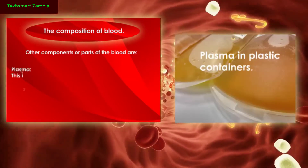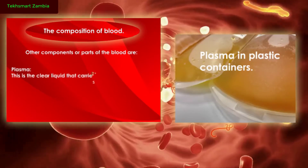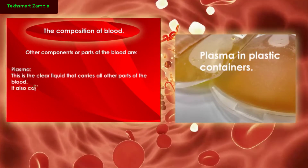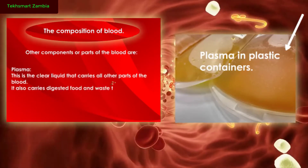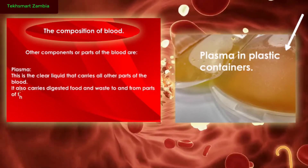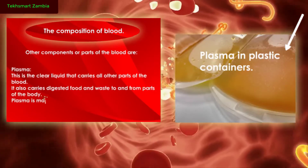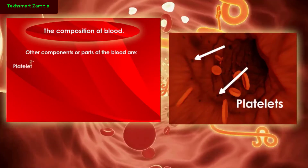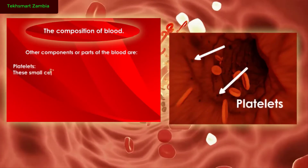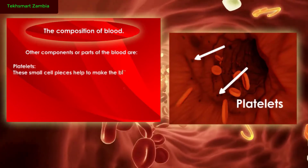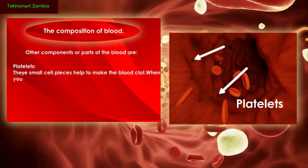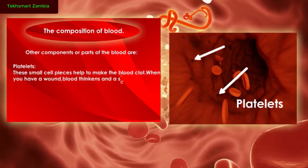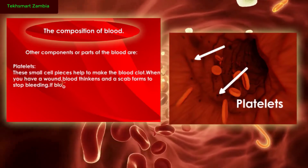Plasma is the clear liquid that carries all other parts of the blood. It also carries digested food and wastes to and from parts of the body. Plasma is mainly water. Platelets are small cell pieces that help to make the blood clot when you have a wound. Blood thickens and a scab forms to stop bleeding.